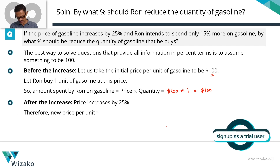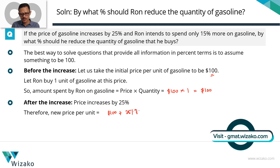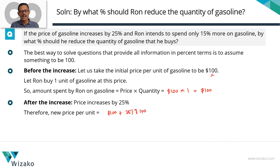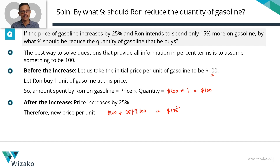The price increases — it increases by 25%. 25% of the initial price: the initial price is $100. So it's gone up by 25% of $100. Having $100 as the base has a lot of benefit here — 25% of $100 is simply 25. So the new price is $100 + $25, which equals $125. The new price per unit of gasoline is $125.